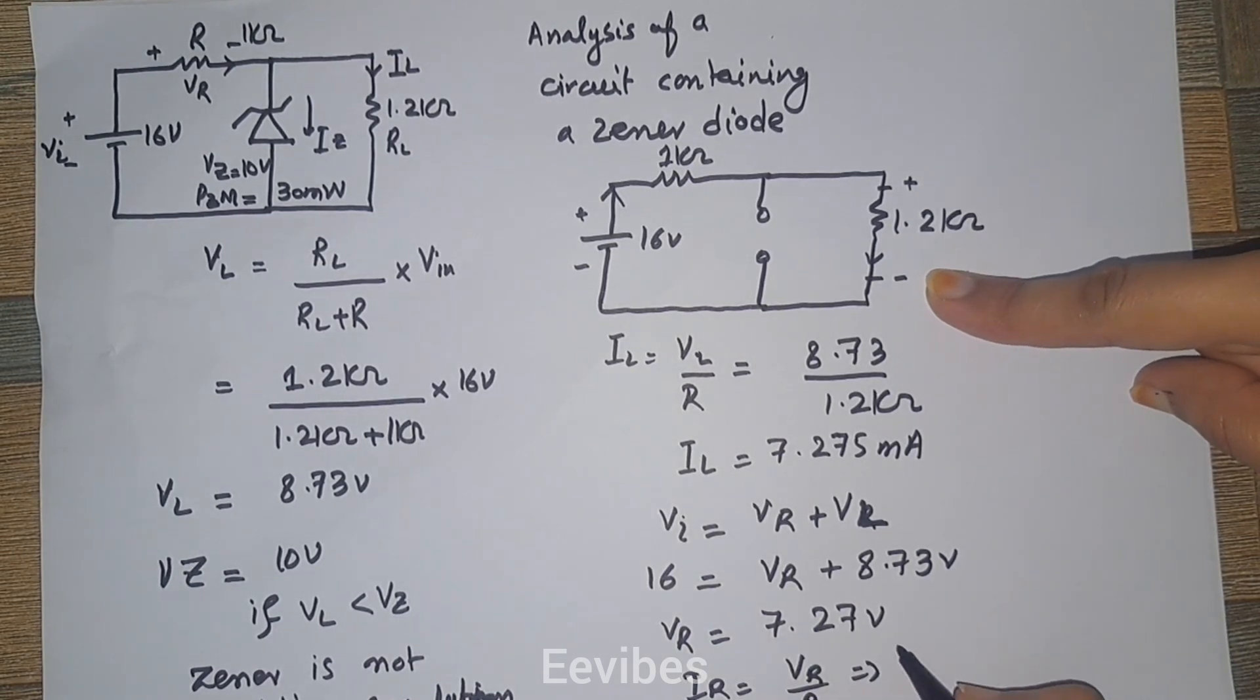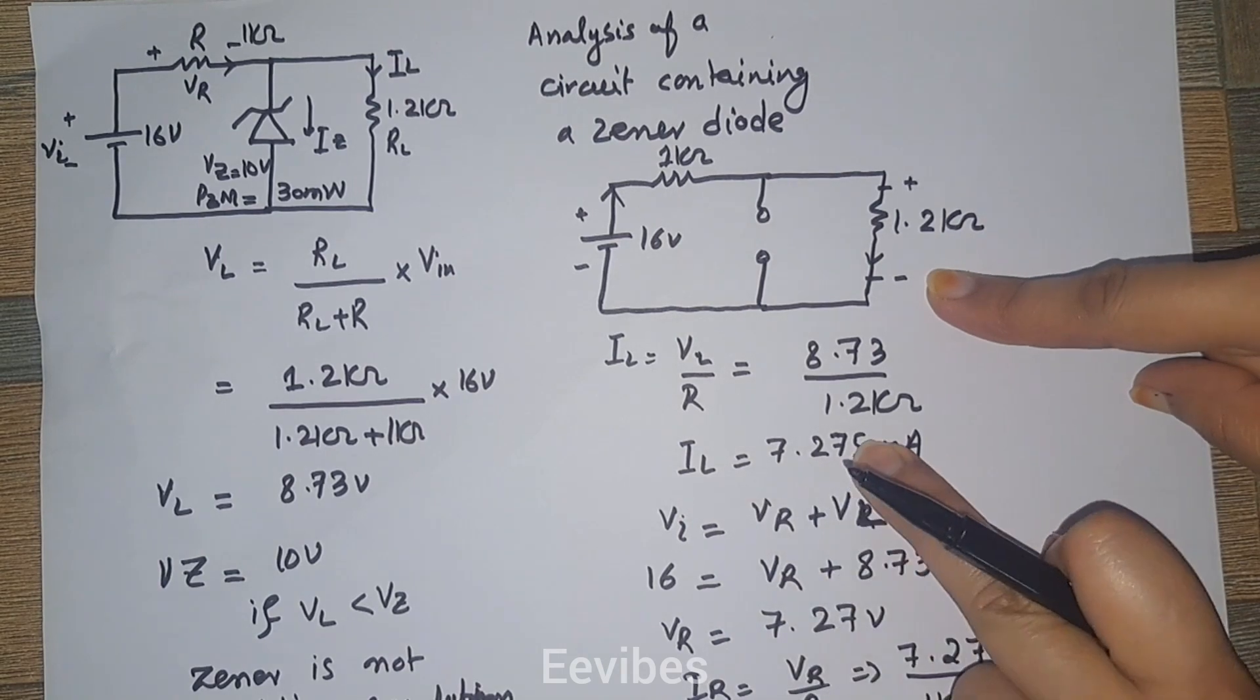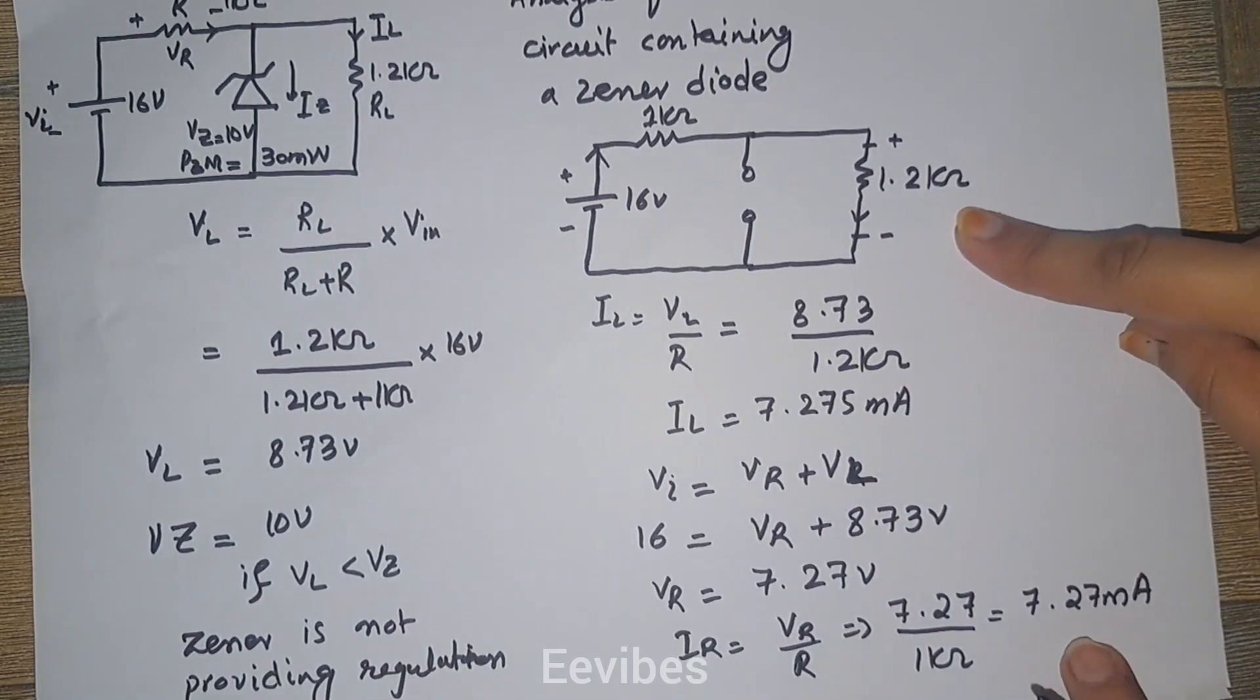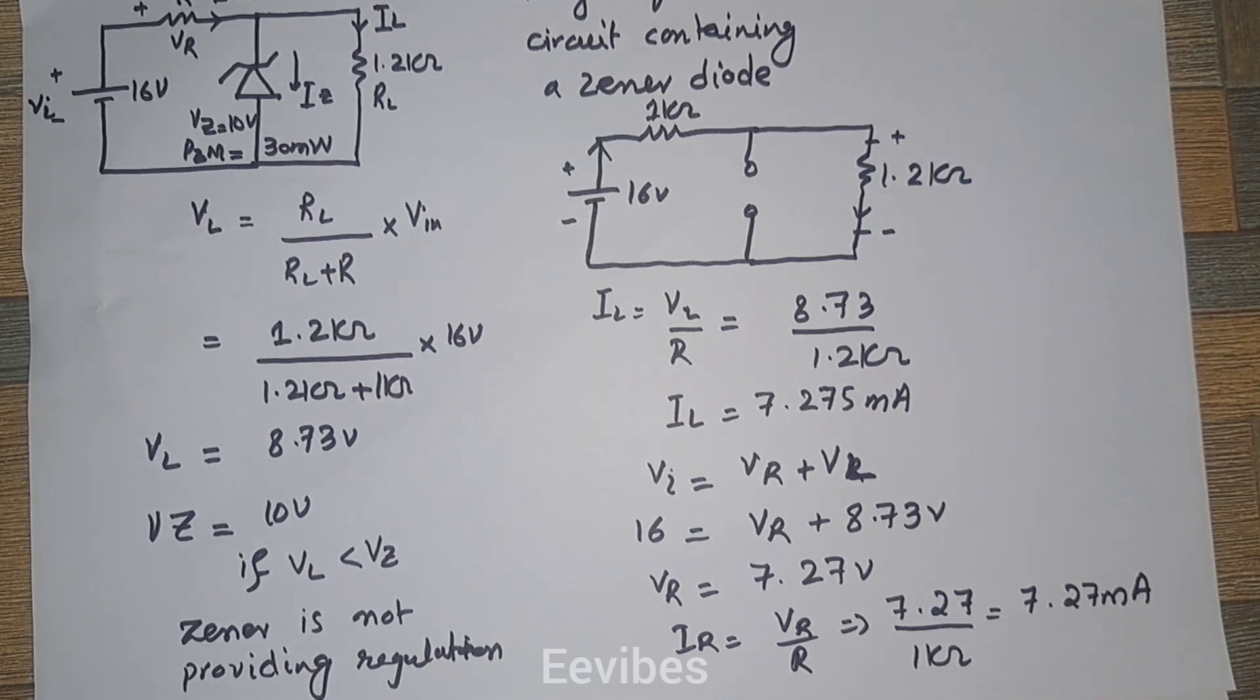So 7.27 divided by 1 kilohm will result in current equal to 7.27 milliamperes, which is approximately equal to the load current.